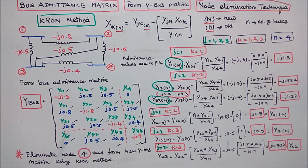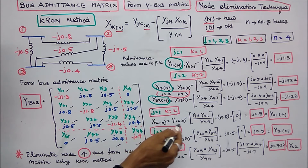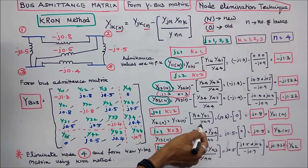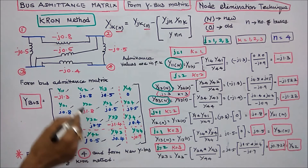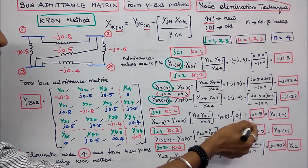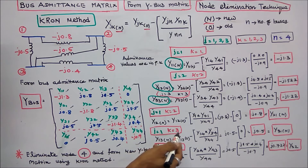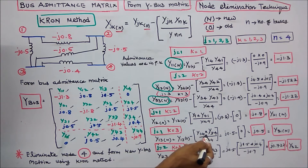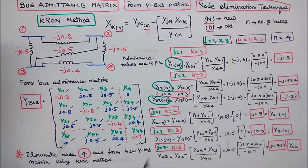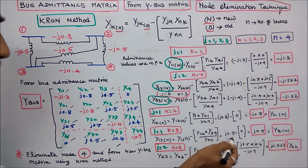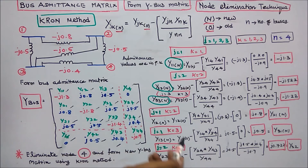The diagonal elements are complete. Now finding the off-diagonal elements. For j=1, k=2: Y12(new) = Y12(old) minus Y14 times Y41 divided by Y44. Since Y14 equals 0, the result is Y12(new) equals plus j0.8. For j=1, k=3: Y13(new) = Y13(old) minus Y14 times Y43 divided by Y44. Since Y14 equals 0, Y13(new) equals plus j0.5, and Y31(new) equals j0.5.